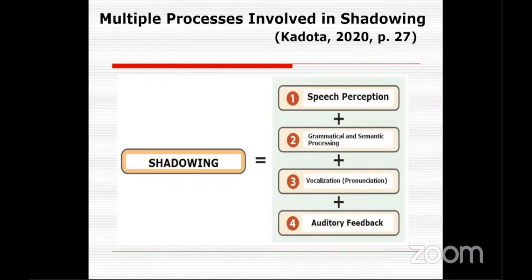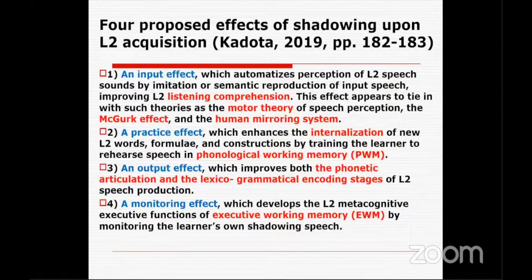In shadowing, first we perceive speech — we make mental phonological or phonetic representations in our minds. Then we make grammatical and semantic analysis. And of course we vocalize the speech we heard. We are also listening to what is being shadowed as auditory feedback. So this is a summary: an input effect, a practice effect, an output effect, and a monitoring effect.